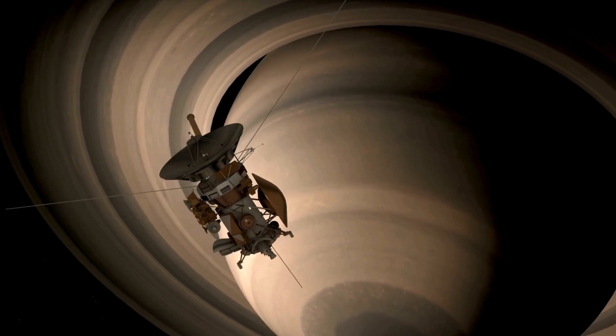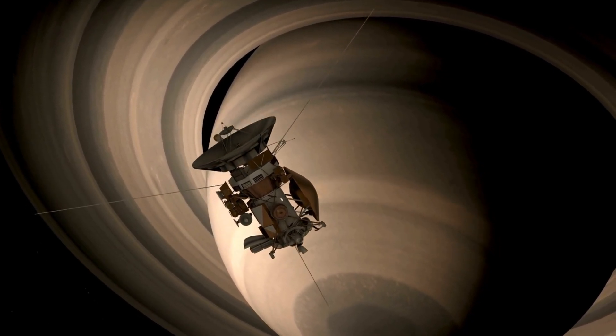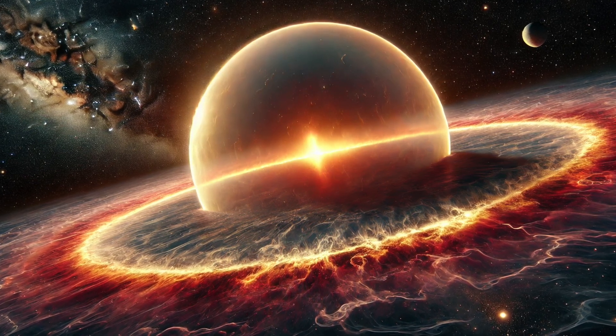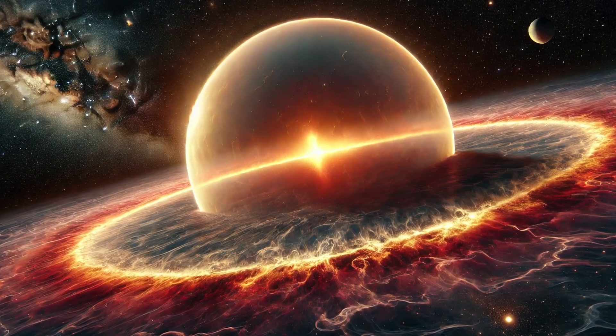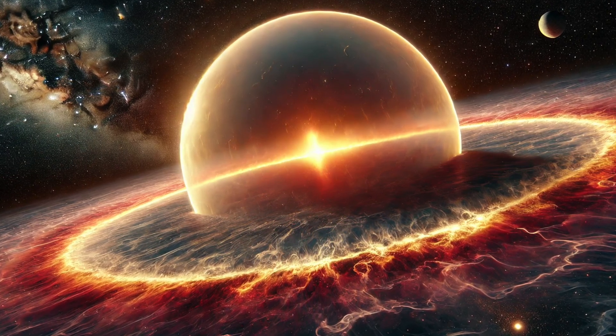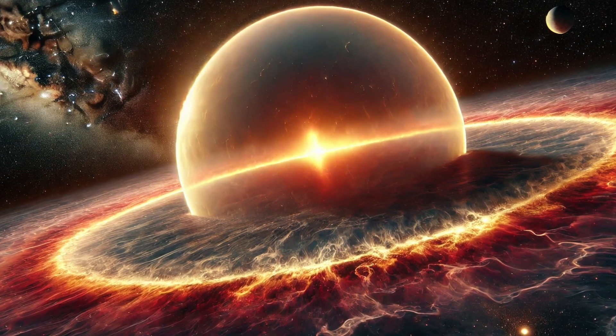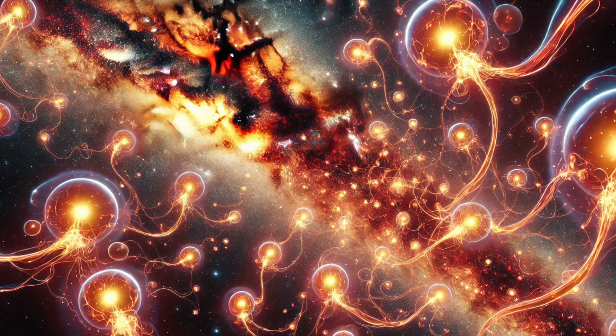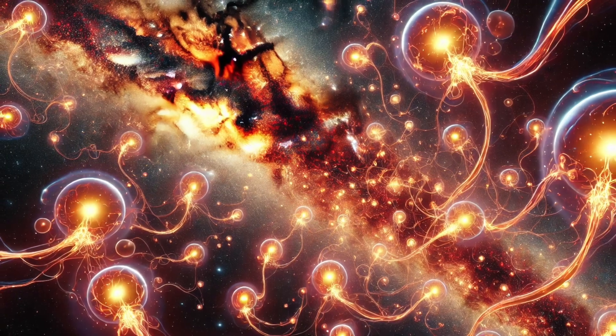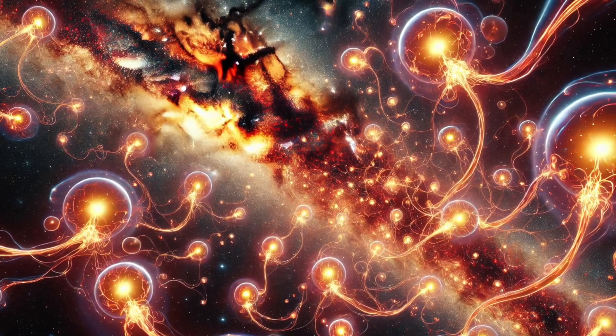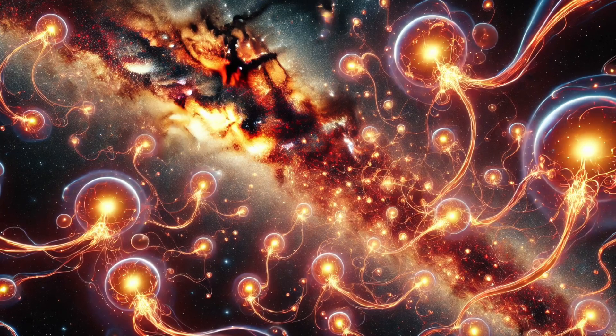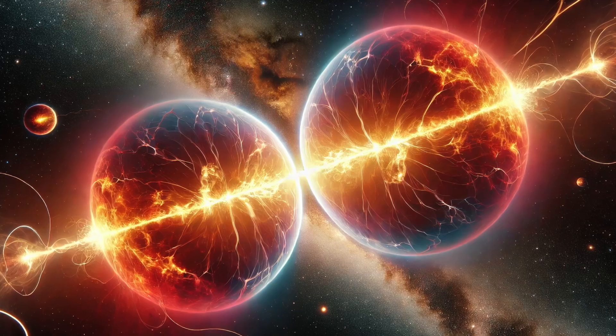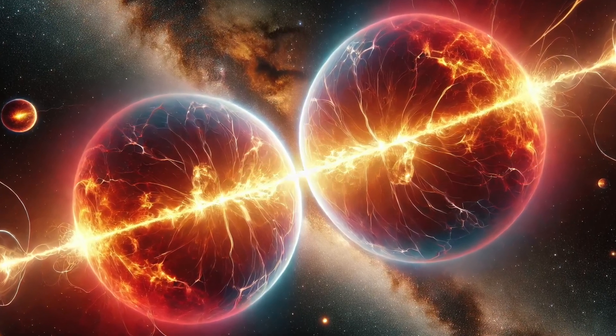The study revealed that the solar system is surrounded by a vast, hot, and low-density gas bubble known as the local hot bubble. This structure is approximately 1,000 light-years wide and has an elongated oval shape. To put this into perspective, the Milky Way spans about 200,000 light-years, and there are likely at least 200 similar gas bubbles within it. These bubbles are estimated to have temperatures ranging between 1 million and 2 million degrees Celsius, far exceeding the Sun's surface temperature of approximately 5,500 degrees.